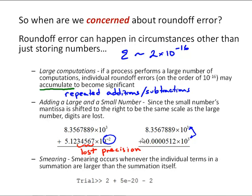Another example is smearing. And this is the example I gave at the beginning of the video where if we have an individual term in a summation that's larger than the summation itself, we know again that this number should come out to 5 times 10 to the minus 20. But MATLAB tells us this is zero. And again, the reason is when we shift this smaller number, it's the same as adding a large number and a small number. When we shift this, we lose the 5 times 10 to the minus 20 when that's shifted over to be on the same scale as the 2.